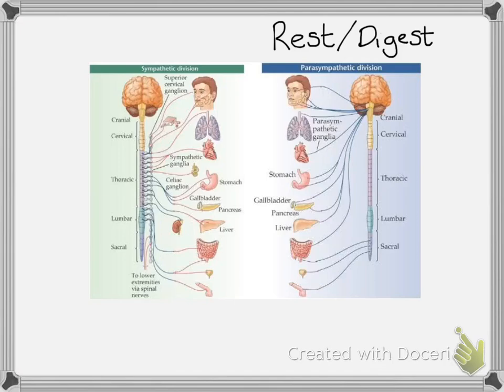If you look closely at the diagram, you will notice that the majority of nerves in the parasympathetic division come either from the cranial region or from the sacral region. That's effectively for efficiency, because you're not doing very much when you are in the parasympathetic state.